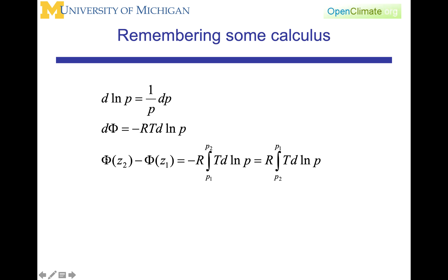We can integrate from one pressure to another, R as a constant, and we get this relationship that the geopotential phi at one altitude minus phi at the other altitude is the negative of the integral from p1 to p2, T d log of p. We're going to change the sign of this by going from p2 to p1, and we keep the temperature in here, the d log of p.